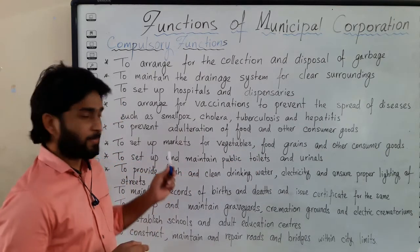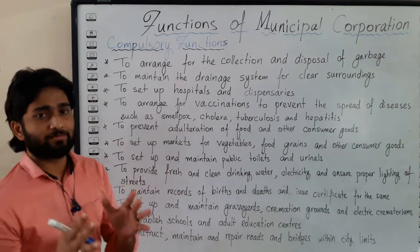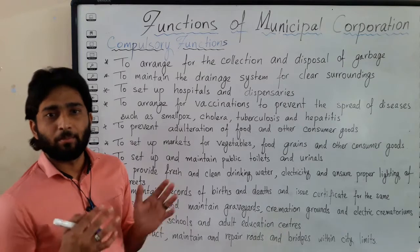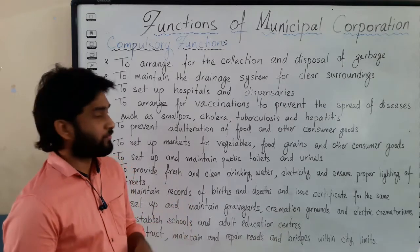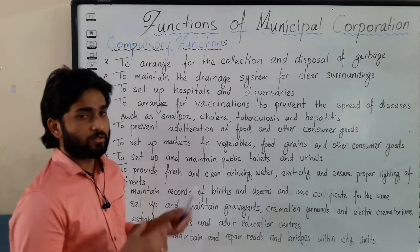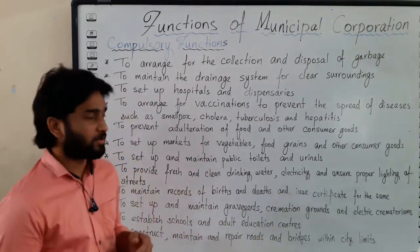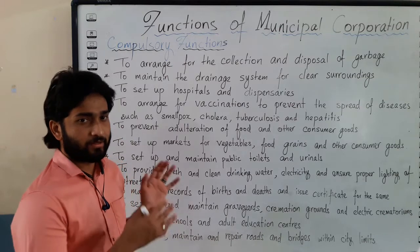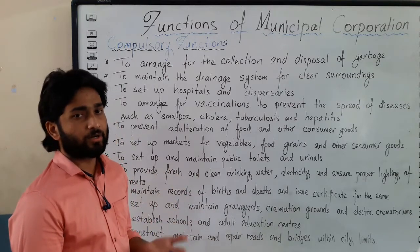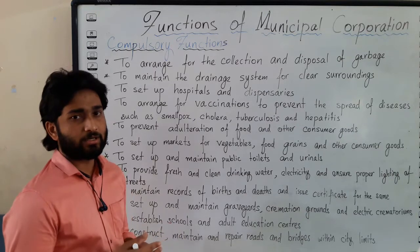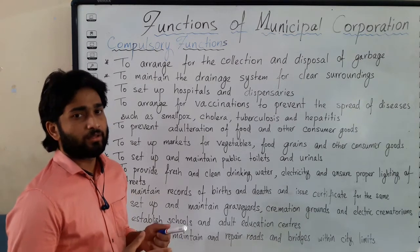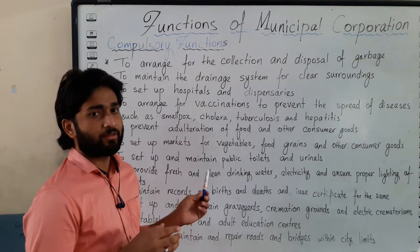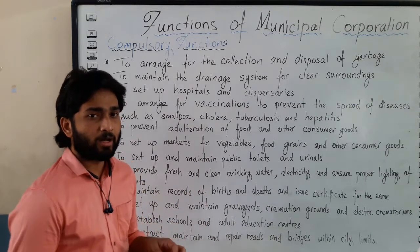The corporation has to provide and set up markets for vegetables and food grains. The availability of vegetables, food grains, and other consumer goods — items which people need to purchase — must be ensured in the market.